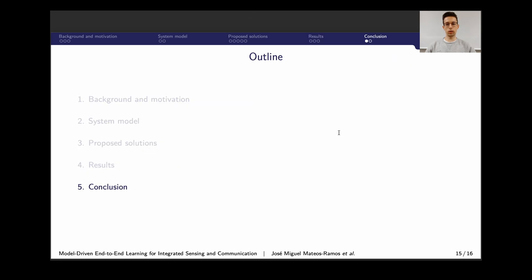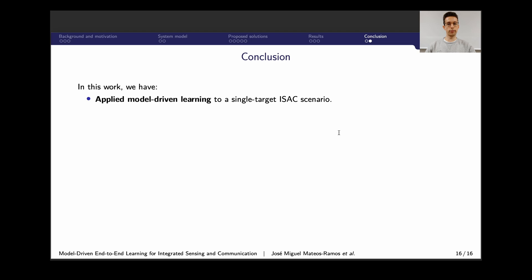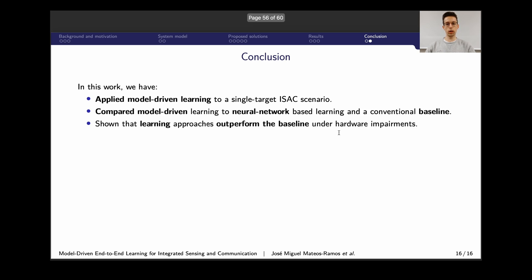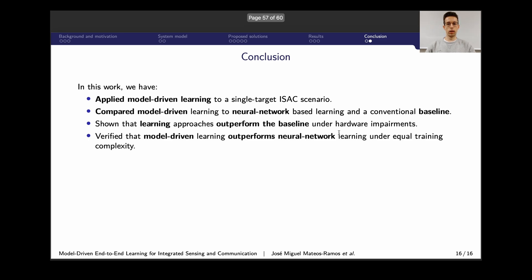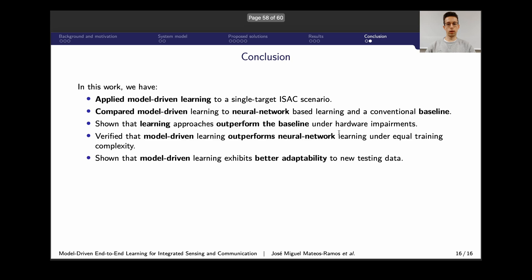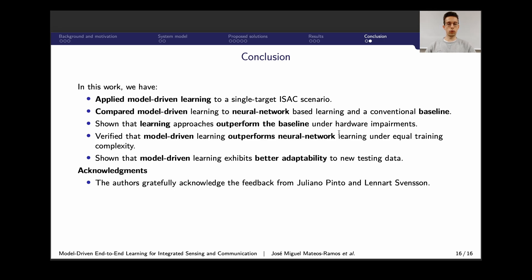In conclusion, we applied model-driven learning to a single-target ISAC scenario and compared it with neural network learning and conventional baseline approaches. Learning approaches outperform the baseline under hardware impairments. More importantly, model-driven learning outperforms neural network learning when the number of learnable parameters is restricted, and shows better generalization capabilities. Finally, I would like to thank Giuliano Pinto and Leonard Spenson for their feedback throughout this work. Thank you for listening.